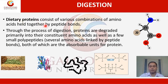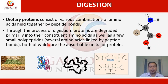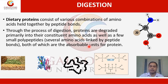Dietary proteins come from several animal and plant sources and consist of combinations of amino acids held together by peptide bonds. Through digestion, proteins are degraded primarily into their constituent amino acids, as well as some polypeptides. Both peptides and amino acids are the absorbable units for protein.